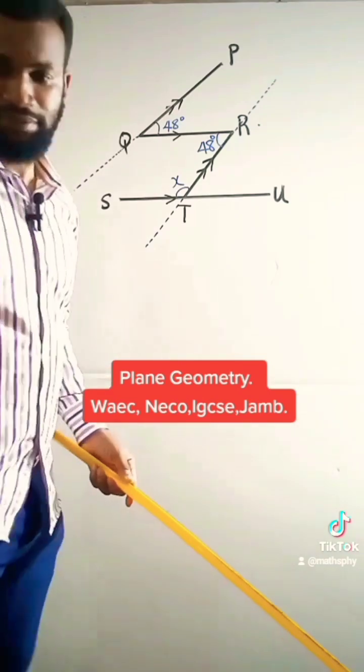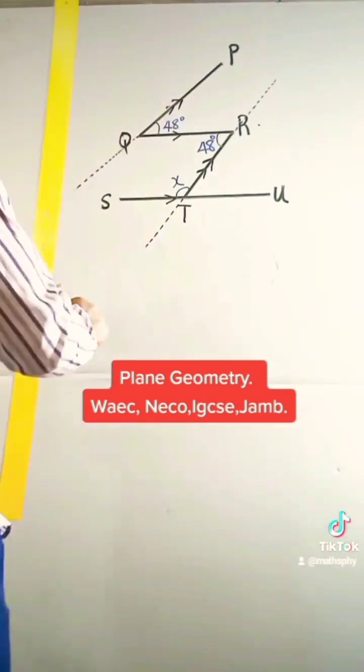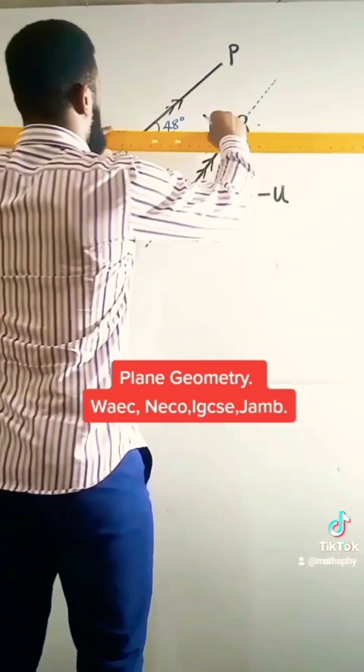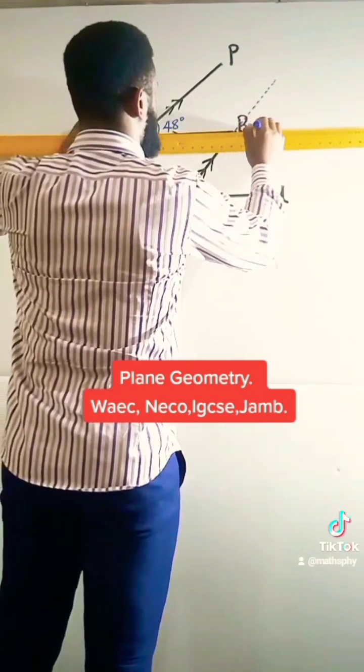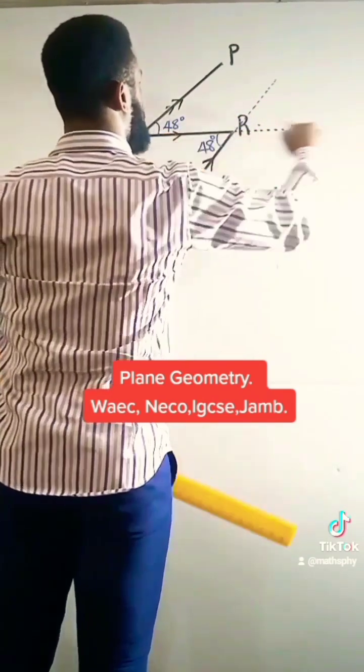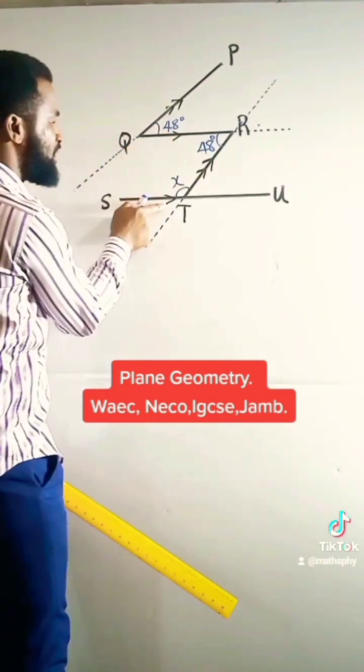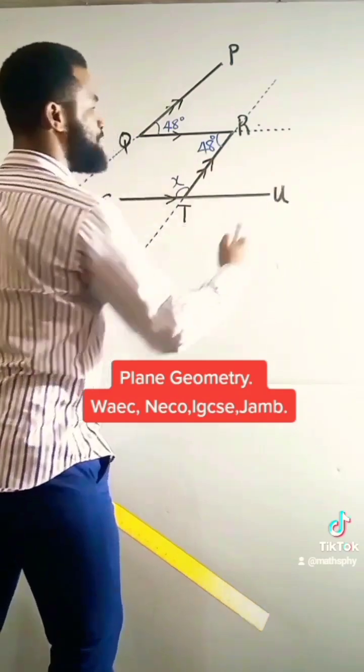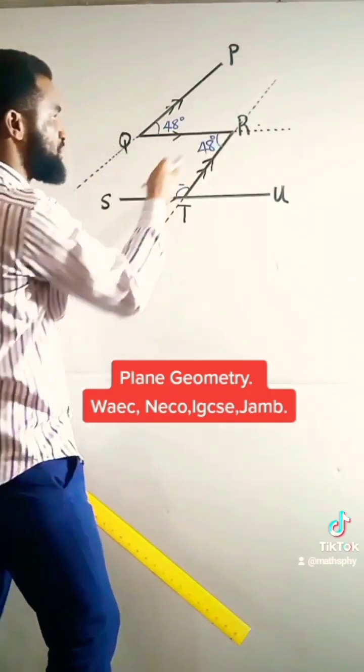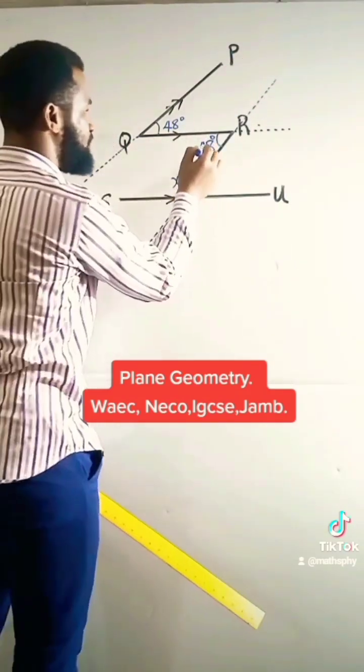another parallel line. This parallel line is with this one because one arrow here and one arrow shows that this line and this line are parallel. So this one now forms a transversal, therefore 48 here